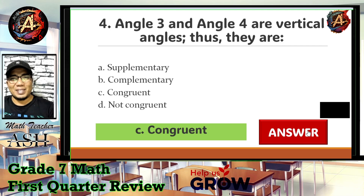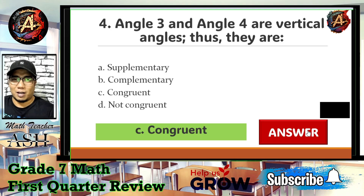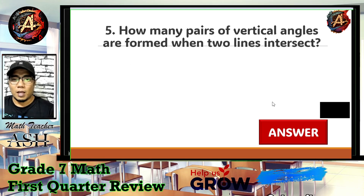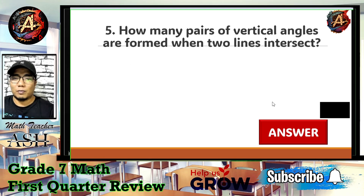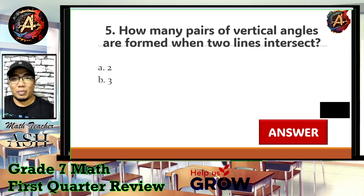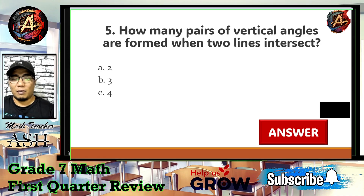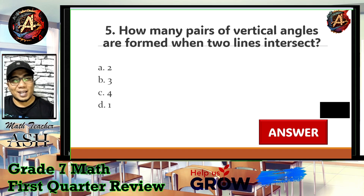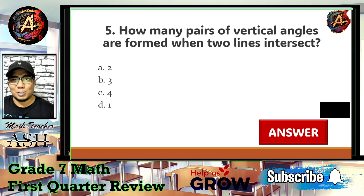Now let us go to question number five: how many pairs of vertical angles are formed when two lines intersect? Is it A) 2, B) 3, C) 4, or D) 1?